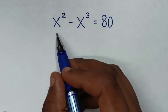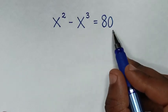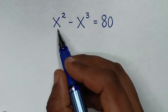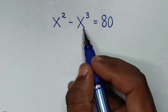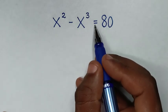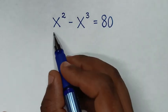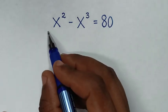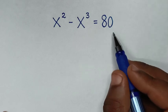Hello. You are welcome to solve this math problem which is x squared minus x cubed is equal to 80. To find the values of x from this equation.